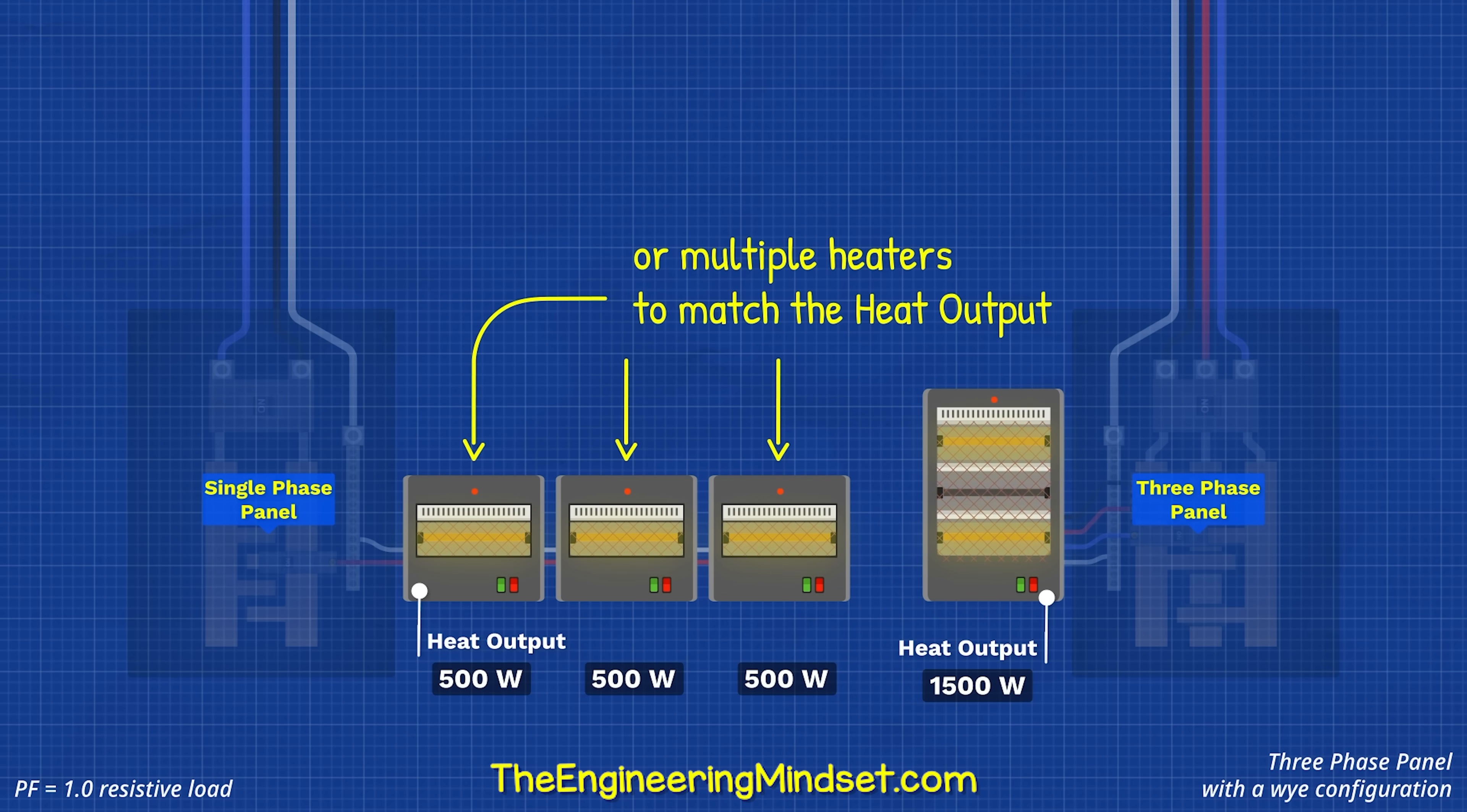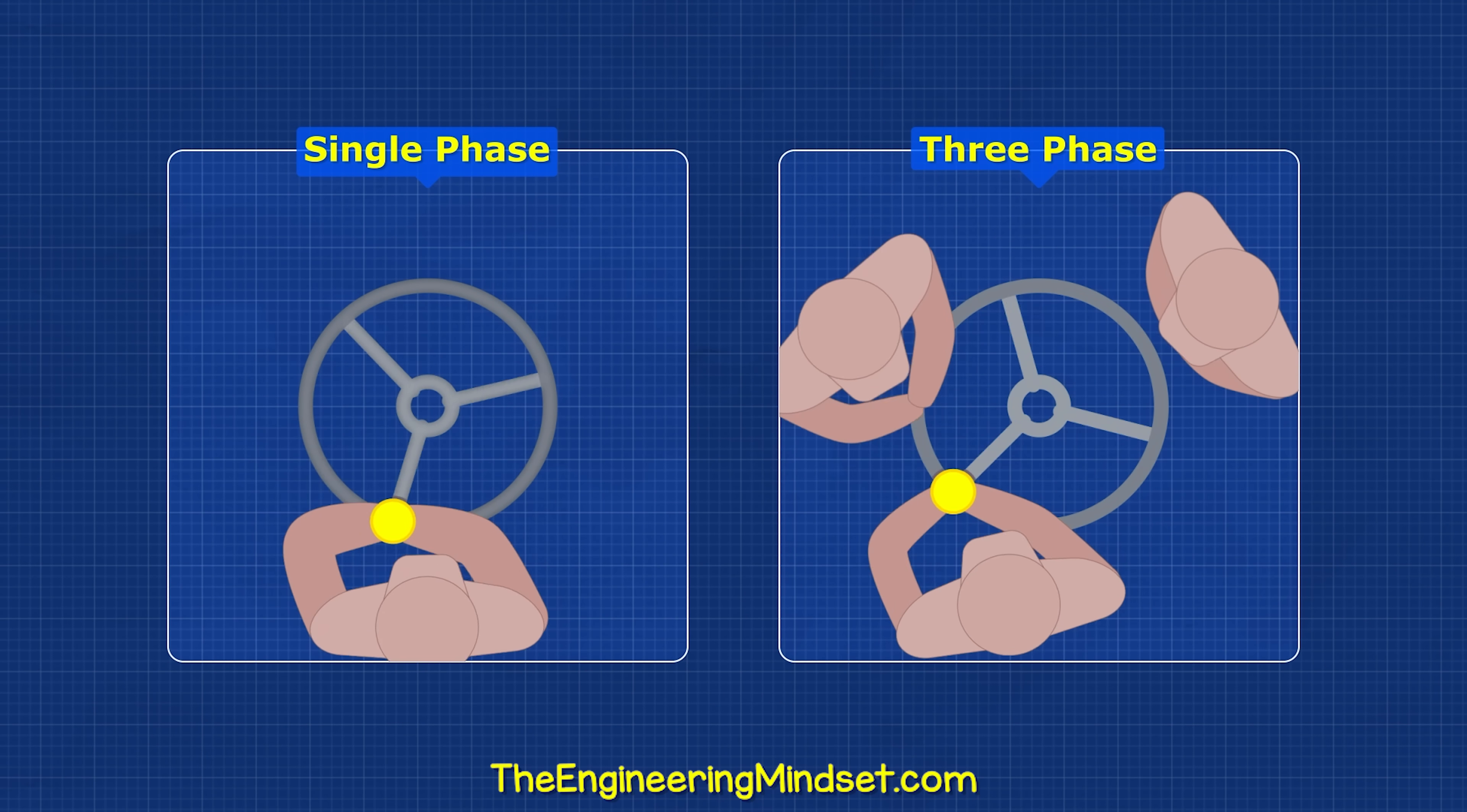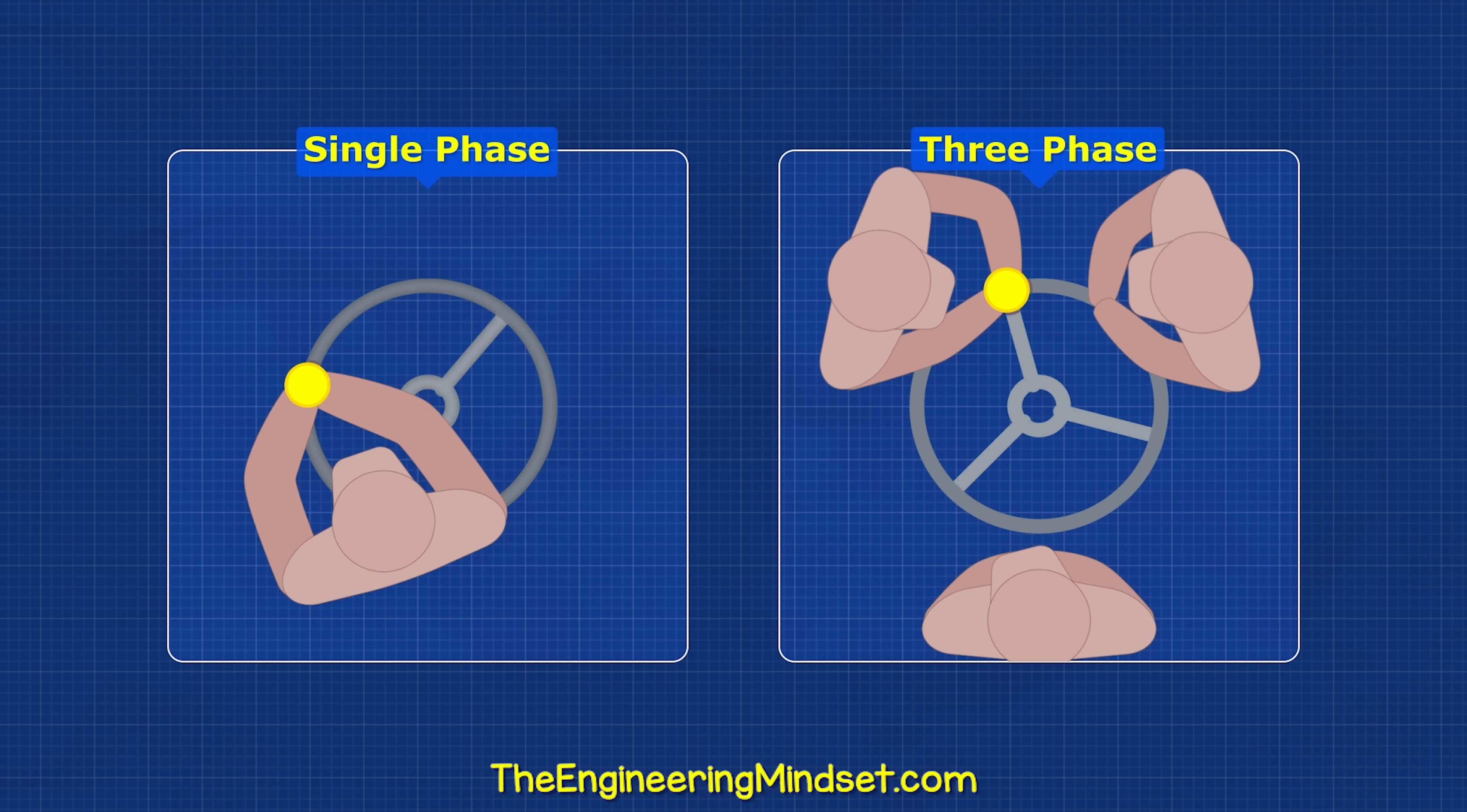We can connect three heaters to the single phase, but they will all pulse at the same time. The same with electrical motors. Imagine three phase as three people taking turns to rotate the wheel instead of just one. It's a smoother rotation and is easier to maintain momentum.